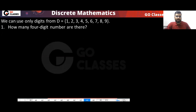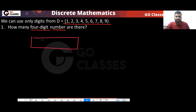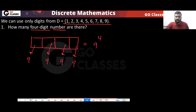Practice questions using digits 1 to 9: How many four-digit numbers are there? No restriction, so for every position we have nine choices. The answer is 9⁴.